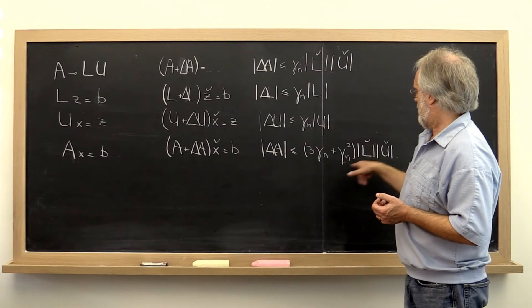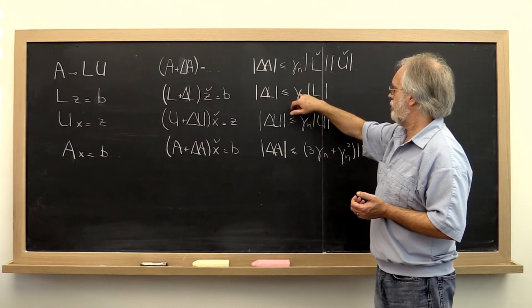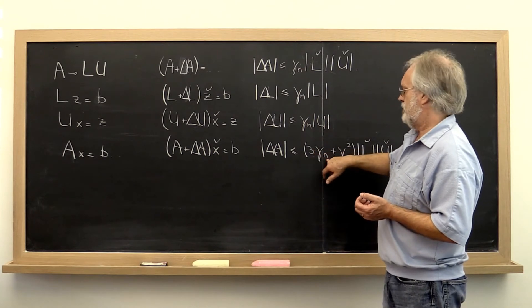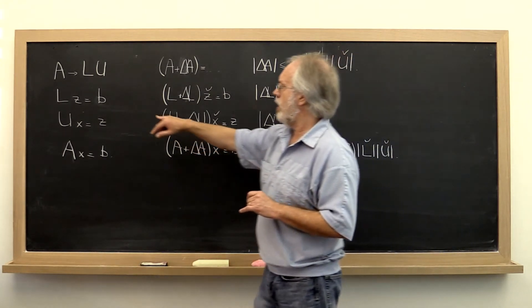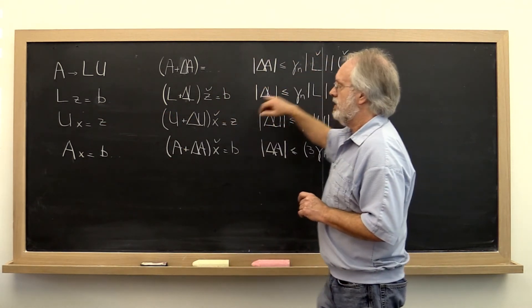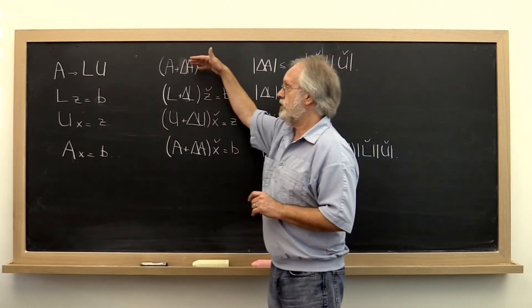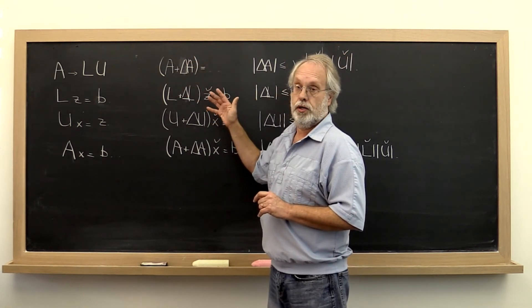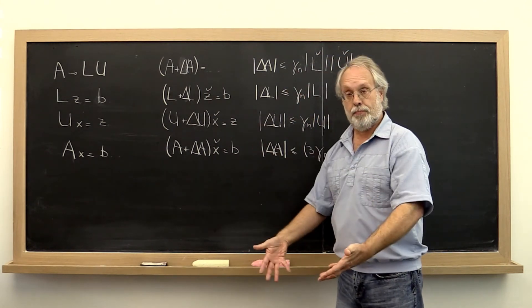So where does this constant come from? Well you can sort of see how maybe pushing through the result gives you this three gamma n. But you have to keep in mind that the solve that you do here is really with the computed L and similarly here with the computed U as opposed to the original L and U. So there is error on top of error happening there.